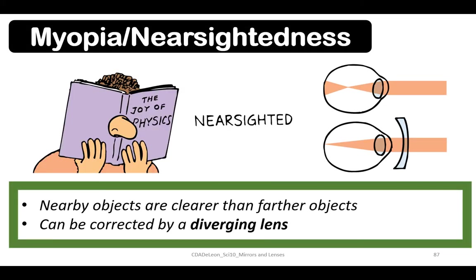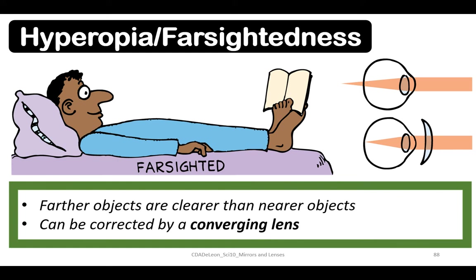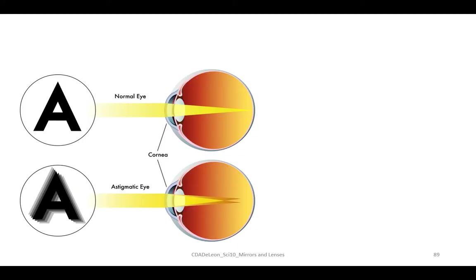Myopia, or nearsightedness: nearby objects are clearer than farther objects; it can be corrected by diverging lenses. Hyperopia, or farsightedness: farther objects are clearer than nearer objects and can be corrected by converging lenses.